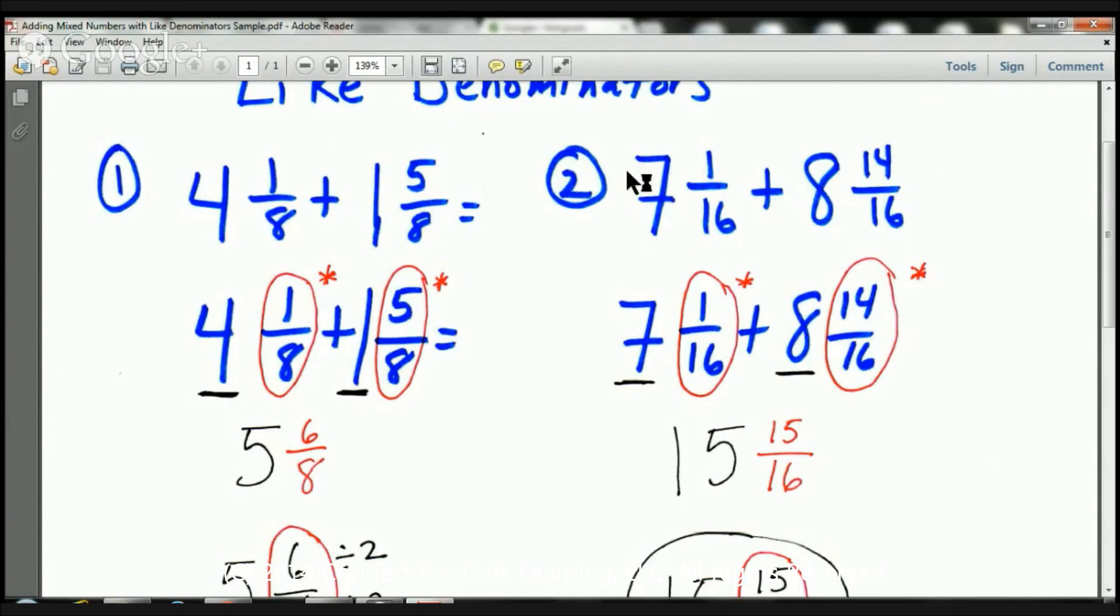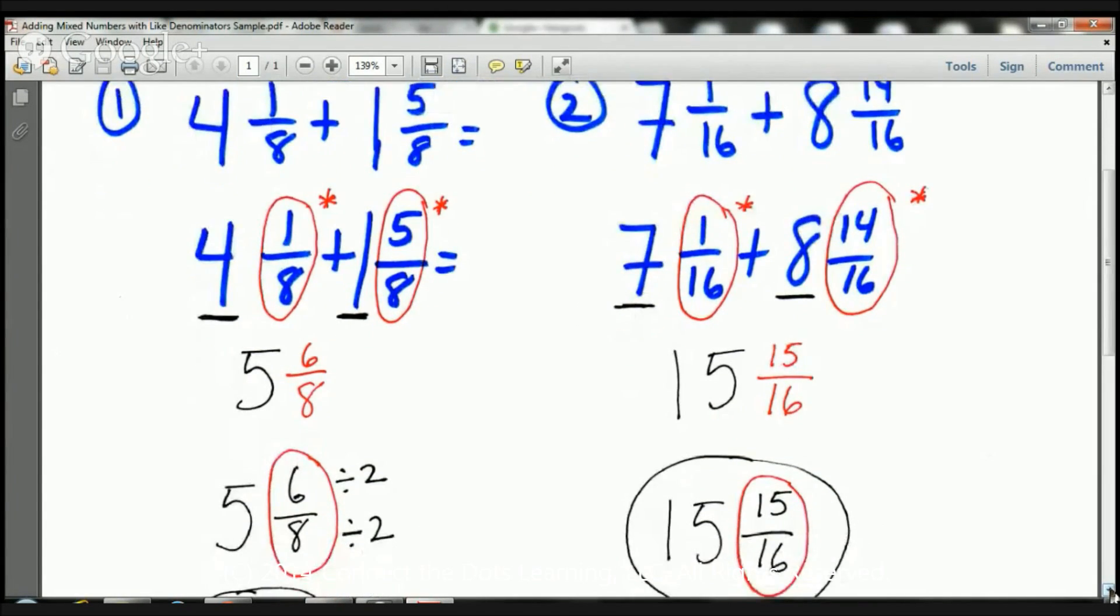So this mixed number here is 7 and 1 sixteenths. This mixed number here is 8 and 14 sixteenths. And we're adding 7 and 1 sixteenth plus 8 and 14 sixteenths. Let's go ahead and get started with the first sample.